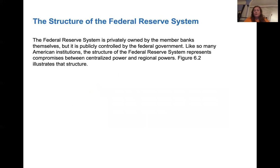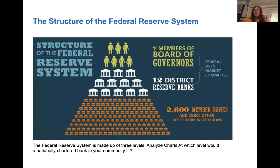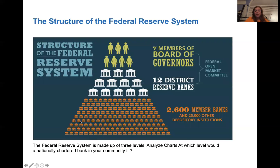The structure of the Federal Reserve System looks like this. You've got seven members on the Board of Governors, then you have 12 district reserve banks, and then there are about 2,600 member banks and another 25,000 depository banks. If we have a nationally chartered bank in our community, it's going to fit right in with these member banks.